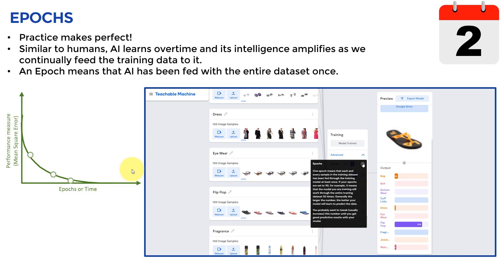The first definition is known as epochs. If you recall, if you click on 'under the hood' you will see a parameter known as epoch, and it's set to 50 by default. Basically, AI — similar to humans — learns through experience and through multiple iterations. We as humans don't learn in one shot; we learn over time, which is why we say practice makes perfect. Similarly, AI learns over time and its intelligence amplifies as we continuously feed training data to it. So what is an epoch? An epoch means that the AI has been fed with the entire dataset just once.